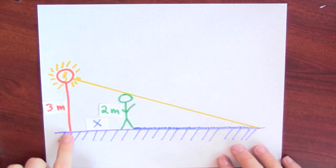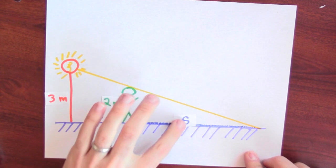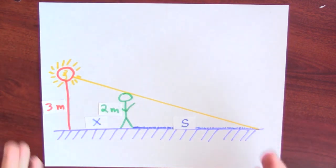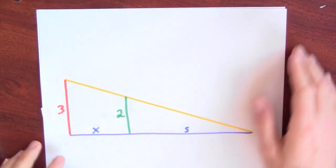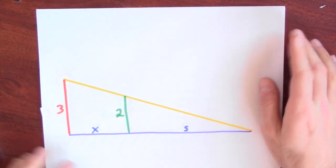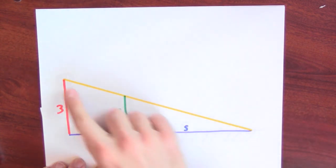And then I can label the other relevant lengths in this diagram. I'll call x, the distance from the bottom of the lamppost to the person's feet. And the distance from the feet to the tip of the shadow, I'll call that s for shadow. So now I've got a nicely labeled diagram, and I can replace that nicely labeled diagram with a slightly more abstract diagram where the person is now a vertical line.